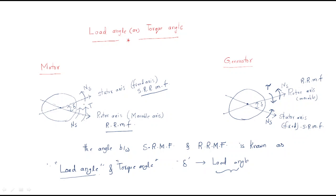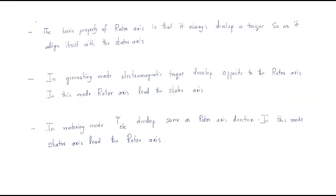Both motor and generator have torques working — for the motor the torque works in the same direction as the rotor axis, while for the generator the torque works in the opposite direction. This is the load angle or torque angle concept for the induction motor and generator.